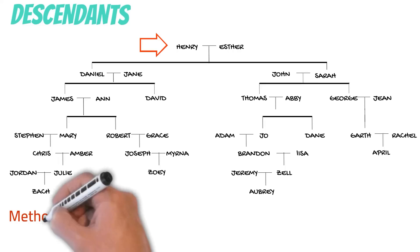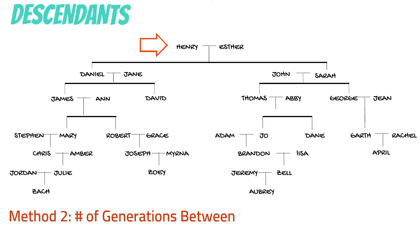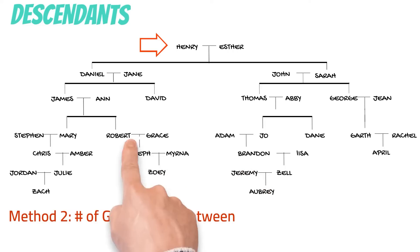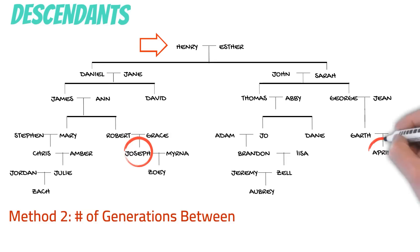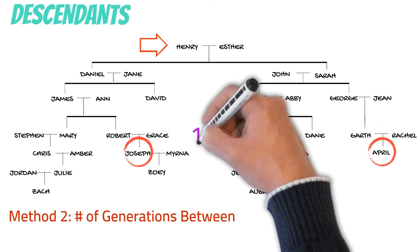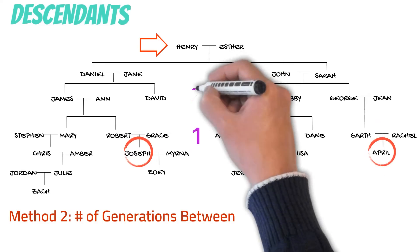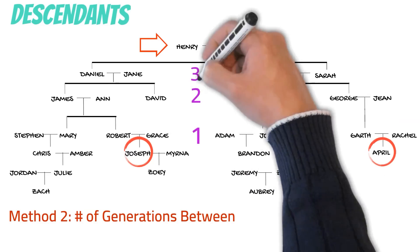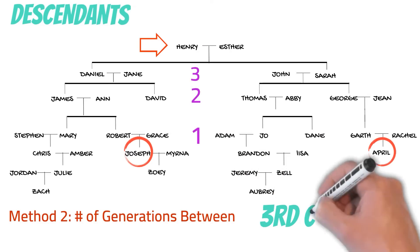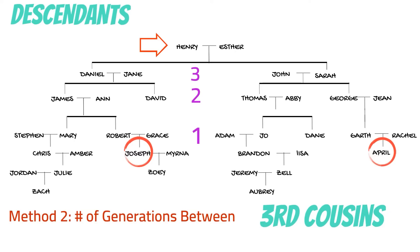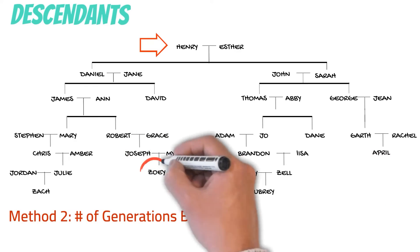Now let's go through the same examples but using method two: the number of generations between. Notice that we do not include the generation of the cousins and their most recent common ancestor, but just the generations between.